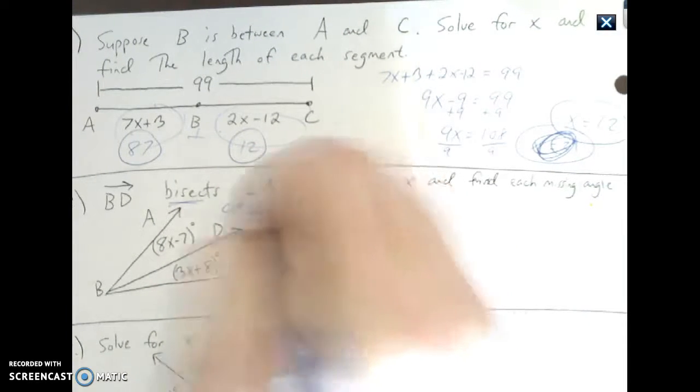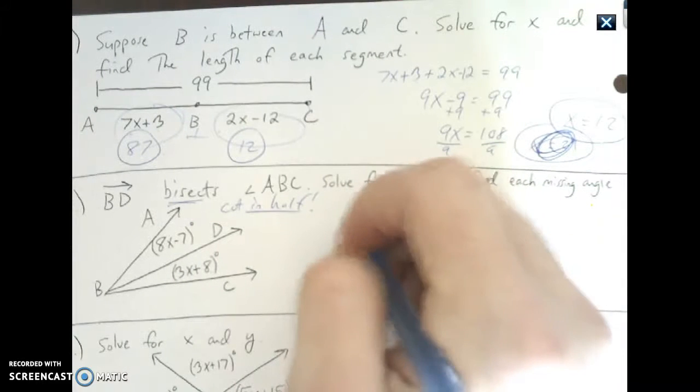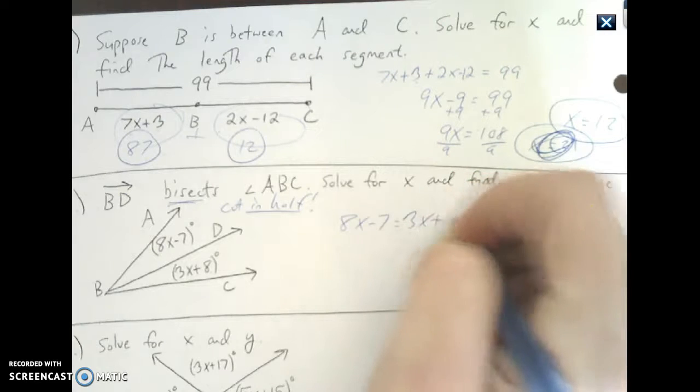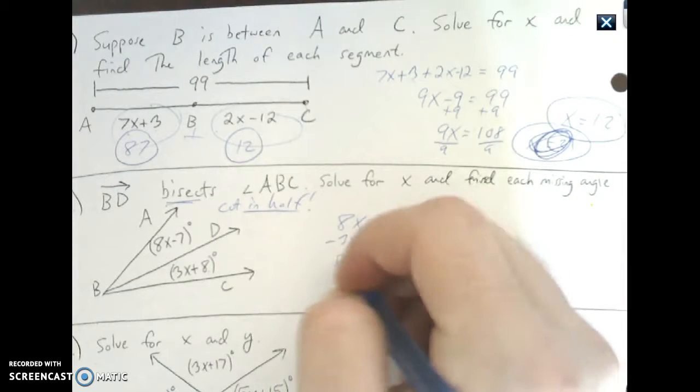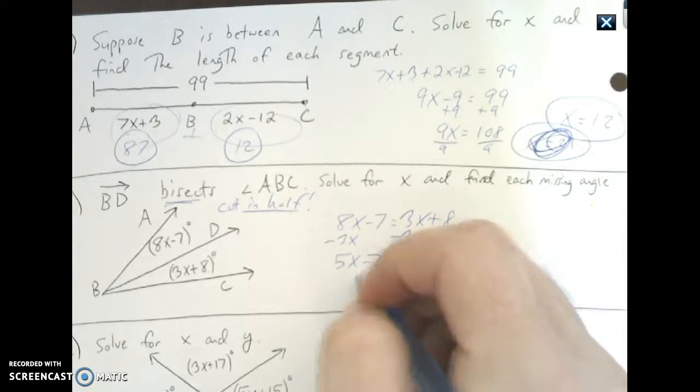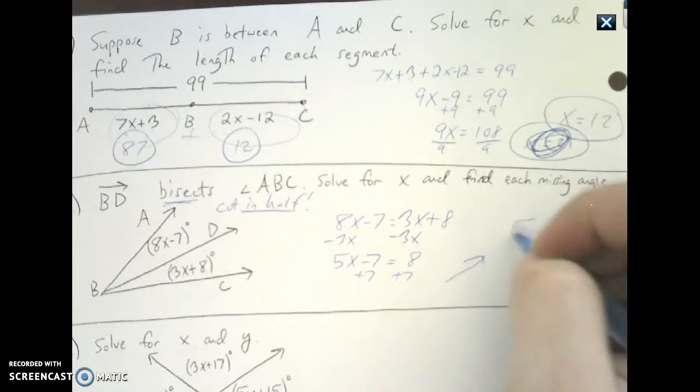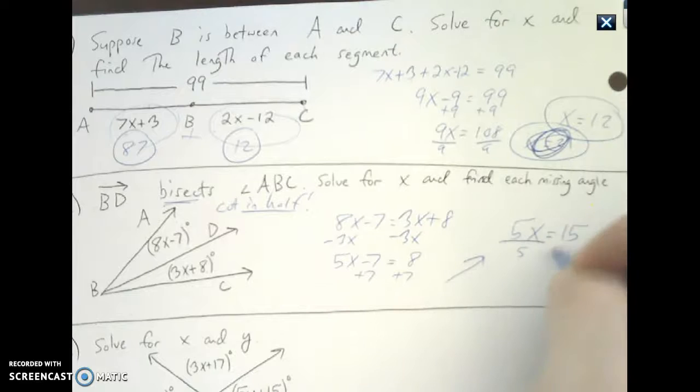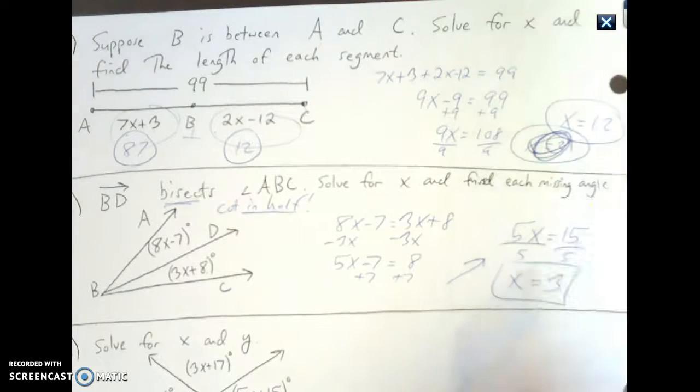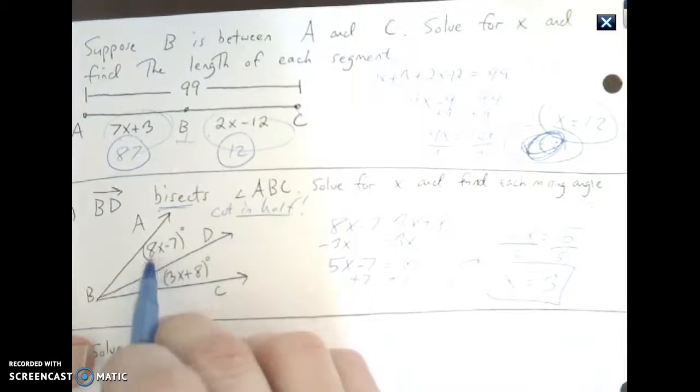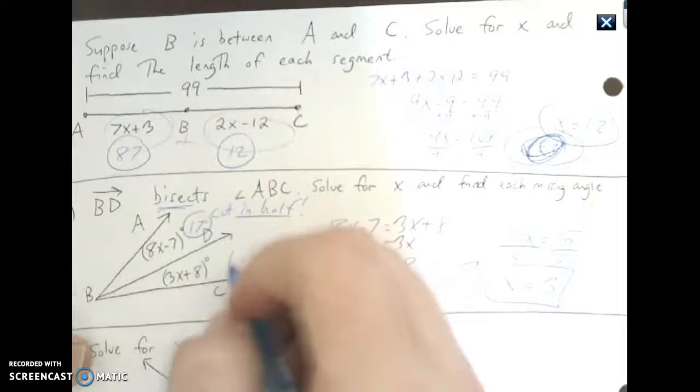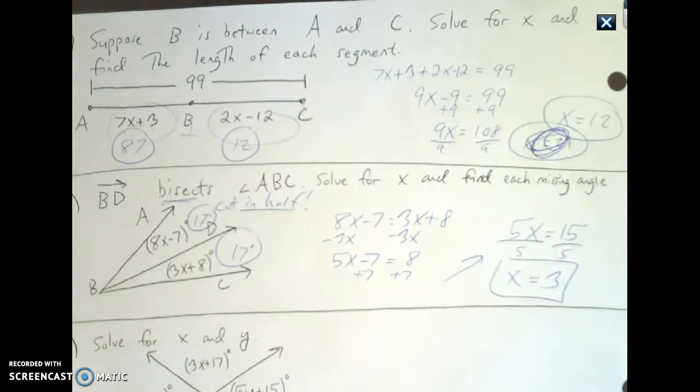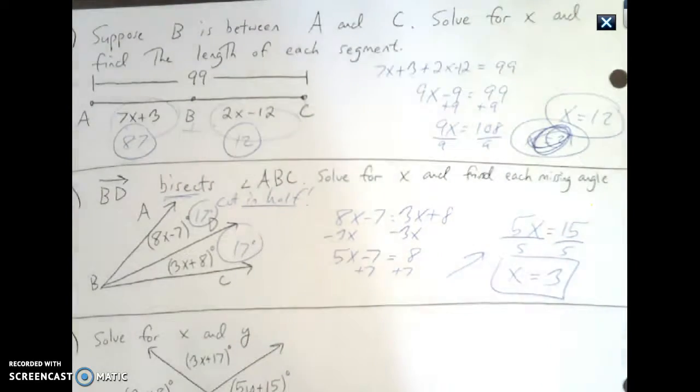Keyword bisects cut down, this will equal that. 8x minus 7 equals 3x plus 8. I can go ahead and subtract 3x from both sides, 5x minus 7 equals 8, plus 7 plus 7, 5x equals 15, divide by 5, x equals 3. You plug this back in, 8 times 3 is 24 minus 7 is 17, and then 3 times 3 is 9 plus 8 is 17.